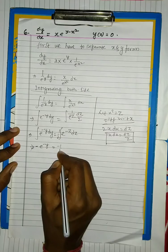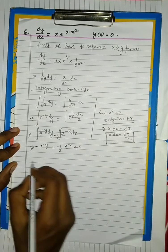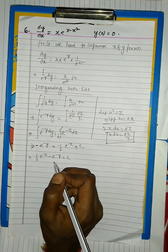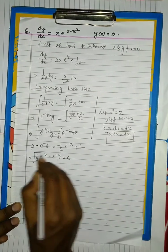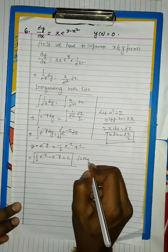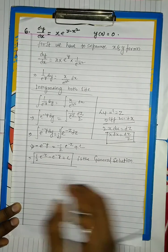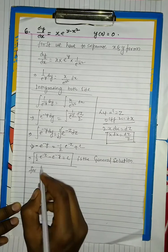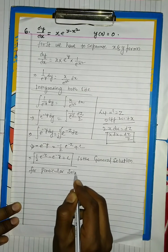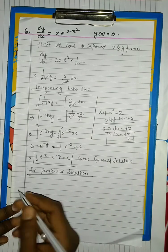A particular solution is found when the given condition is there. In this question, the given condition is at x equal to 0, y equal to 0. So we have to also find a particular solution. It is not given in the question that you have to find a particular solution, but if the condition is given, we have to find the particular solution as well.